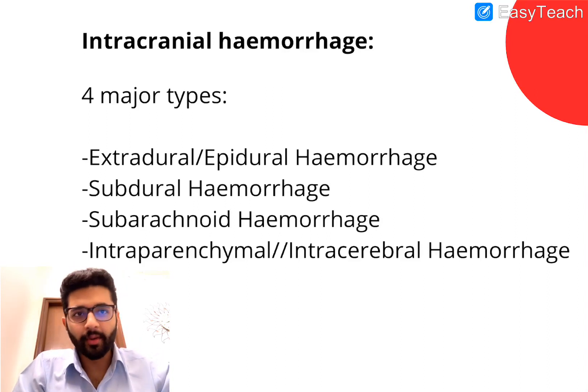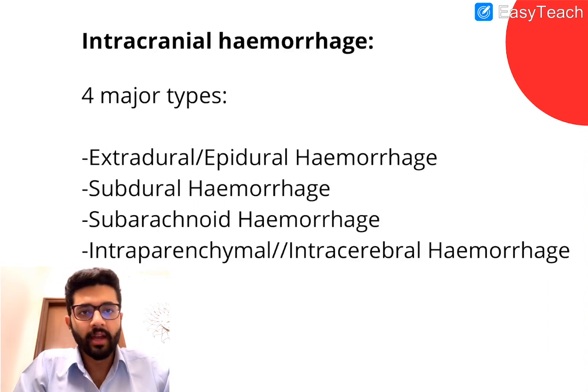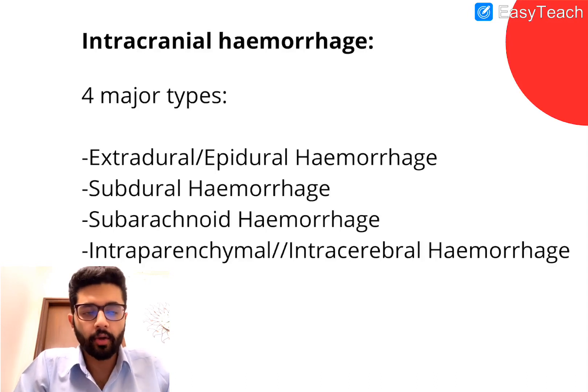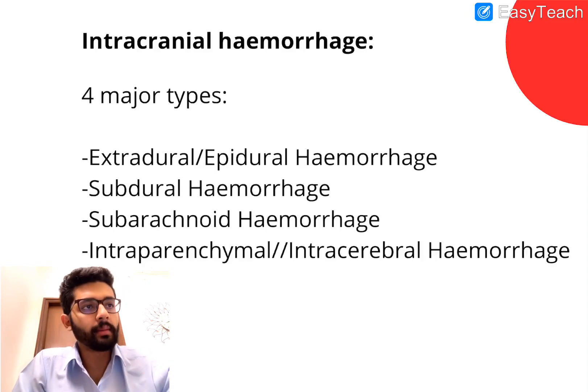Hi guys, welcome to today's session on intracranial hemorrhage. We'll talk about the four major kinds of intracranial hemorrhage which include extra-dural, sub-dural, sub-arachnoid and intra-parenchymal hemorrhage.